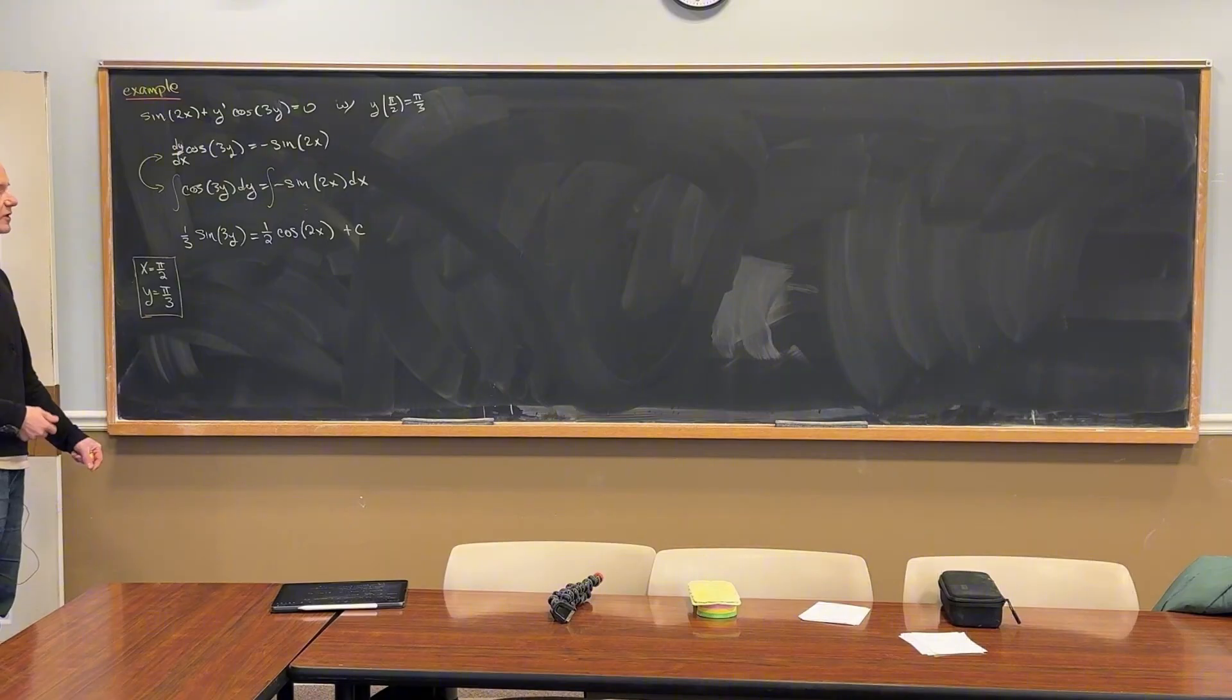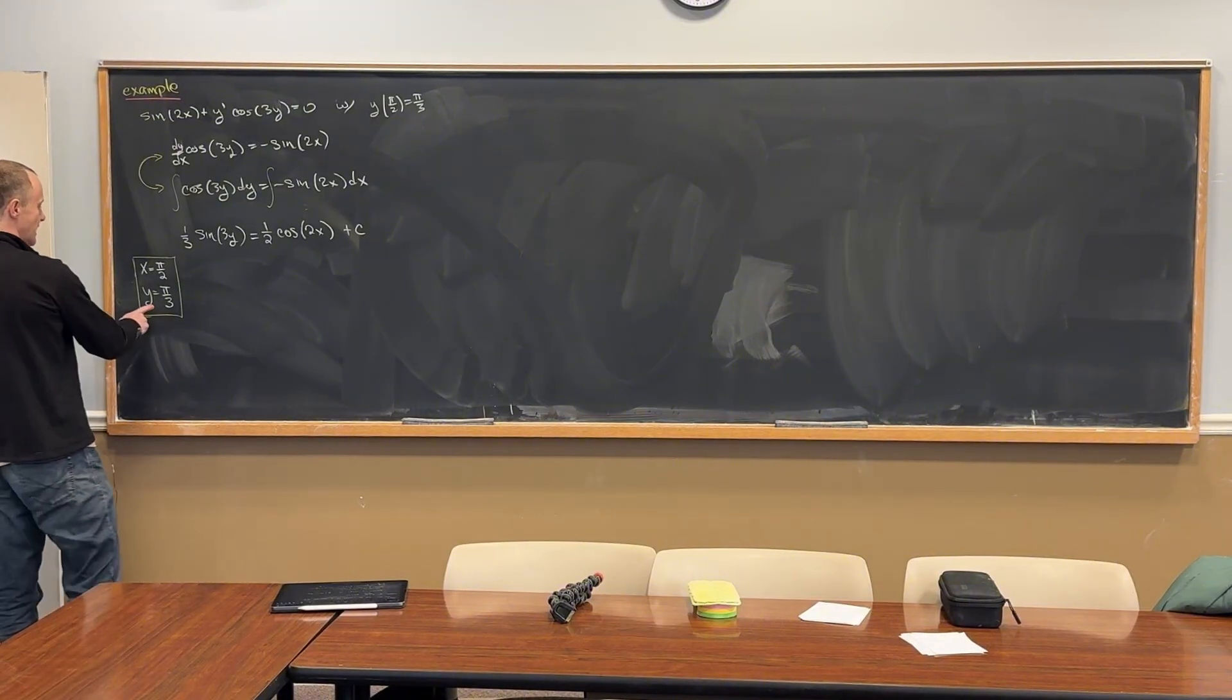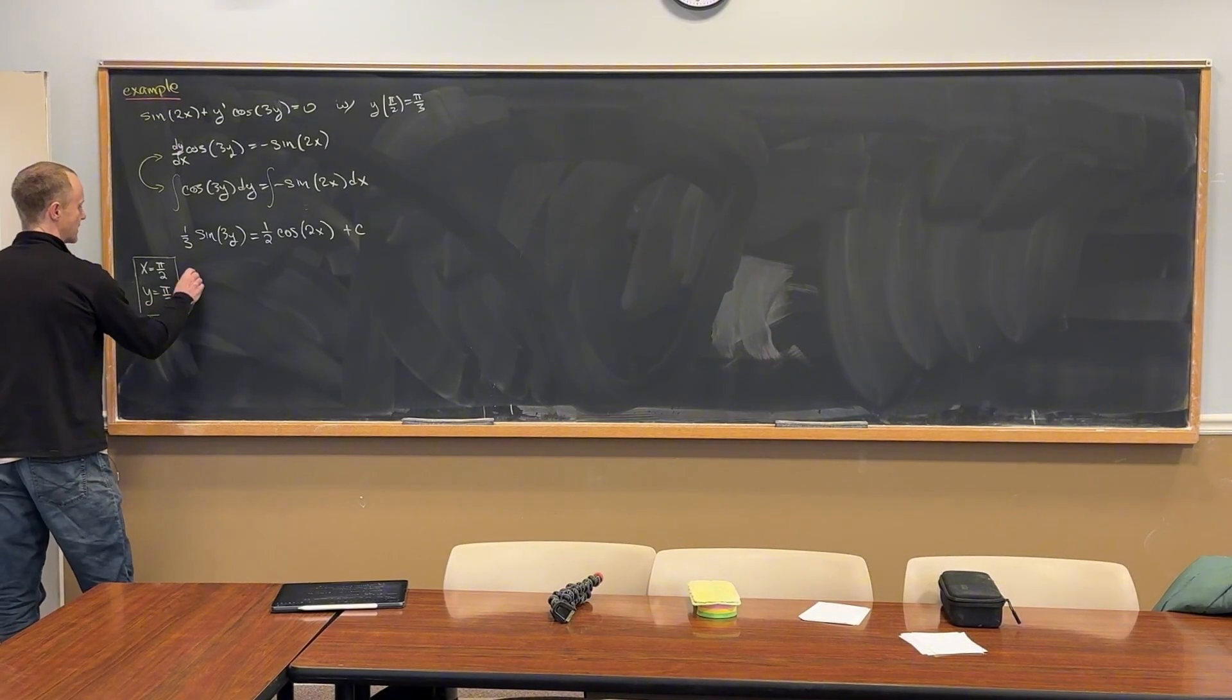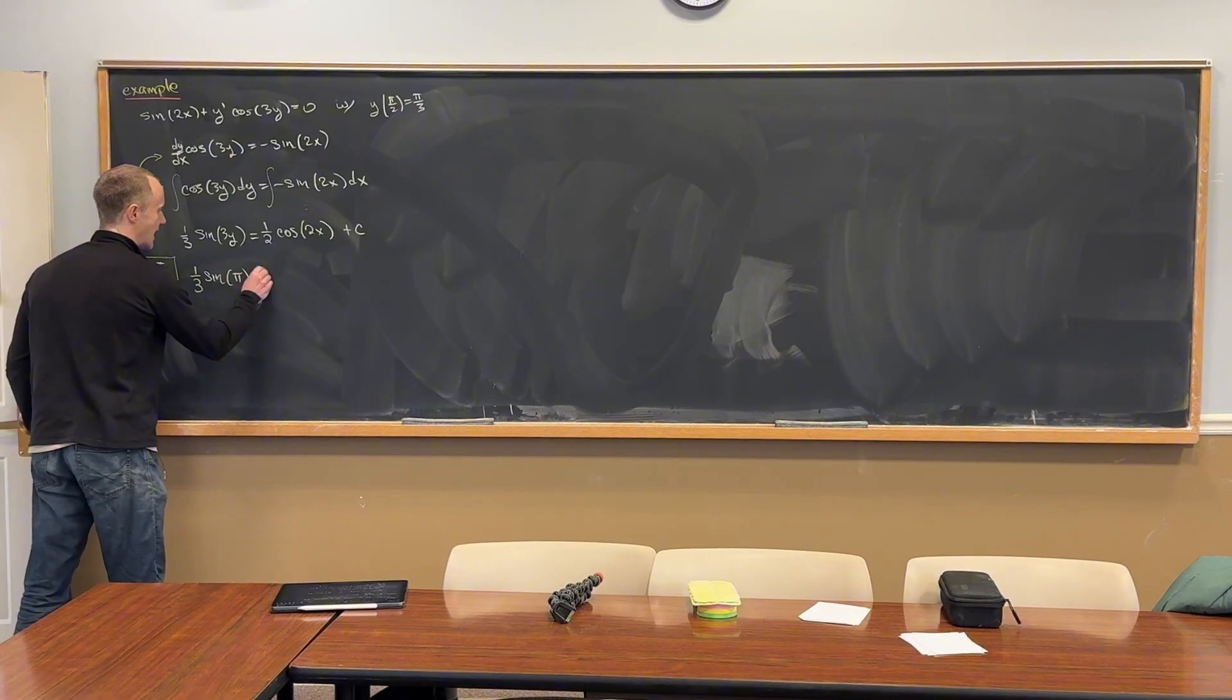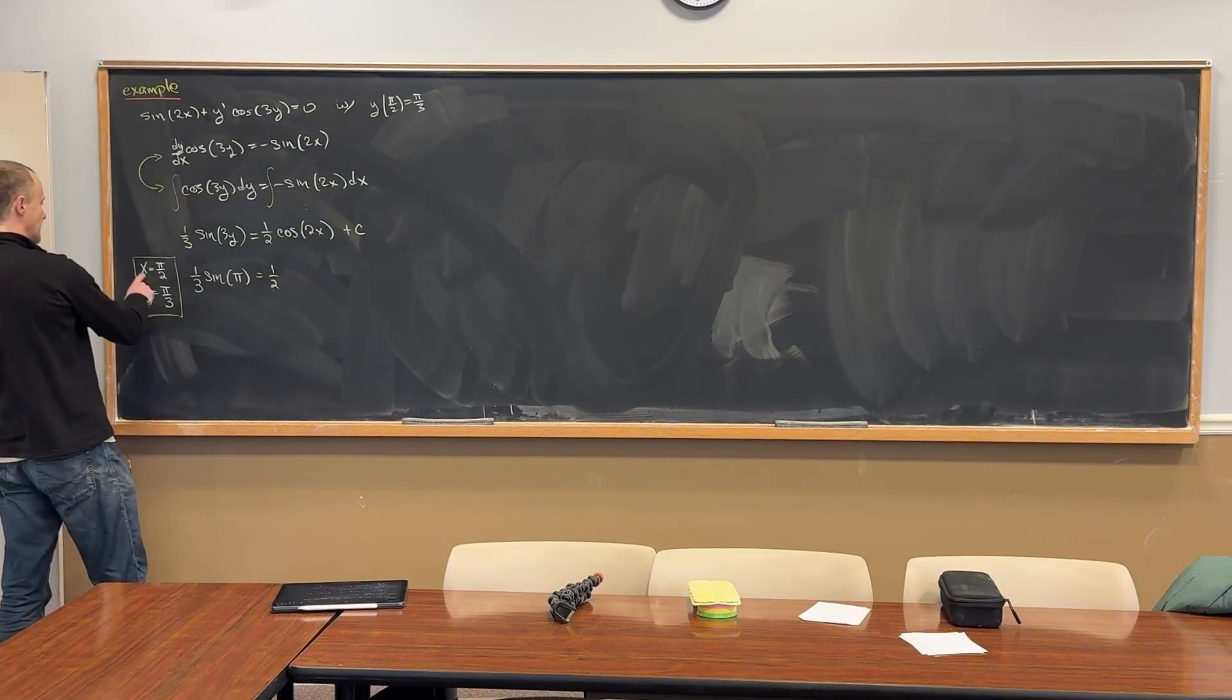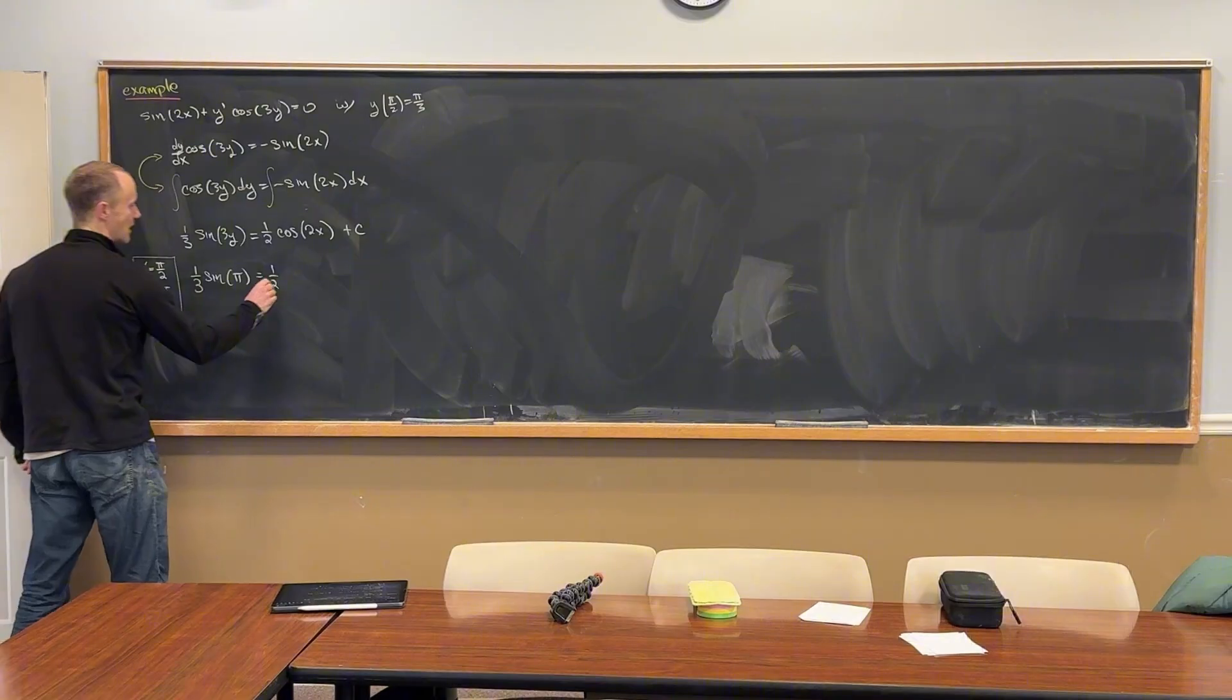Okay, so if we plug in y equals pi over 3, that's going to give us a third times the sine of pi equals plugging in x equals pi over 2, we get a half cosine of pi plus a constant.